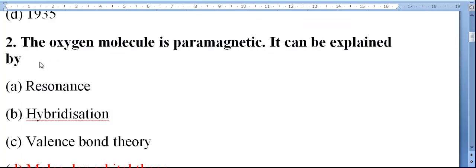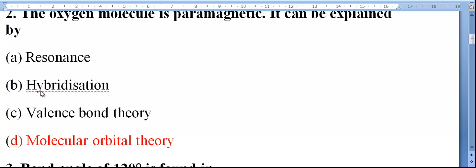The oxygen molecule is paramagnetic. It can be explained by: a) resonance, b) hybridization, c) Valence Bond theory, d) molecular orbital theory. It is molecular orbital theory, is it right?